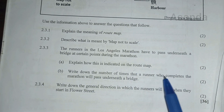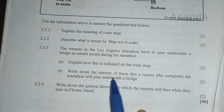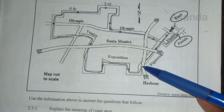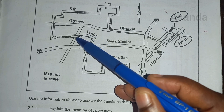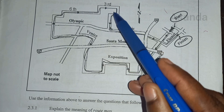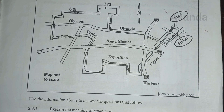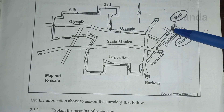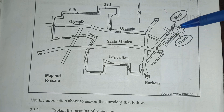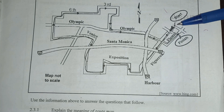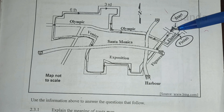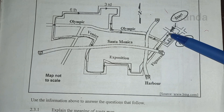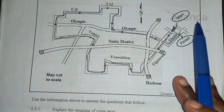Question 2.3.4: Write down the number of times a runner will pass under a bridge. Starting from the beginning: one, two, three — be careful, that one is a crossroad, not a bridge — four. So you pass under the bridge four times. It's a give and take on this one because the arrow is pointing exactly on the bridge, which is confusing. The answer is four, or possibly five, but we'll go with four.